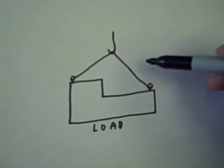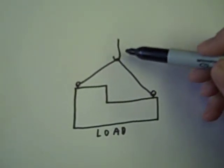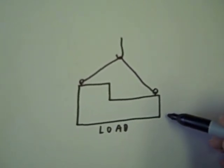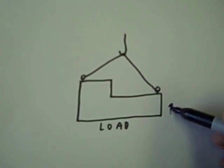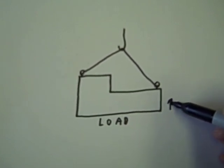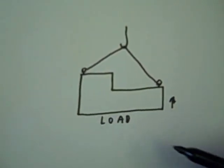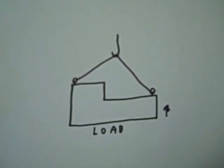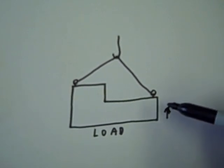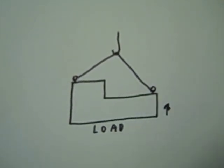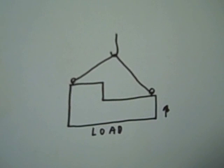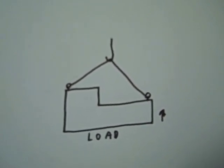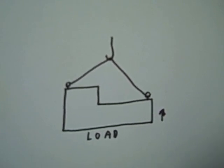In this example if we were to raise this load the right-hand end would raise first and the left hand would stay on the ground where the load is resting. In that case we would need to set the load down in order to change the connections to make the load lift level.